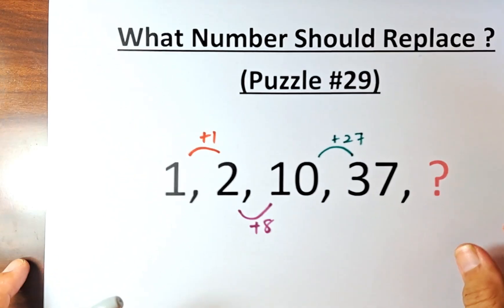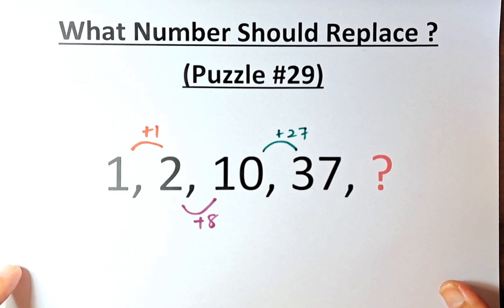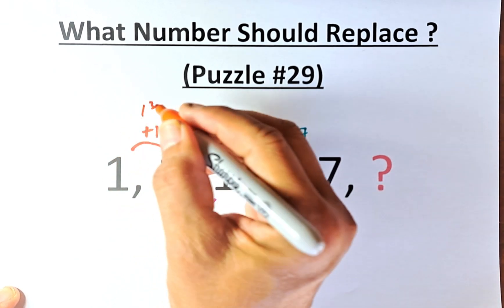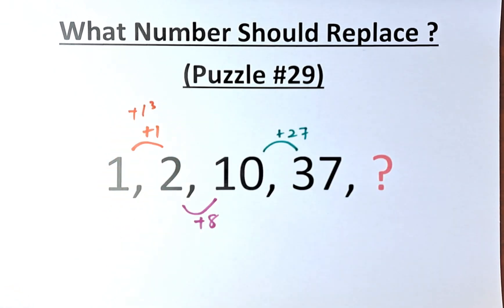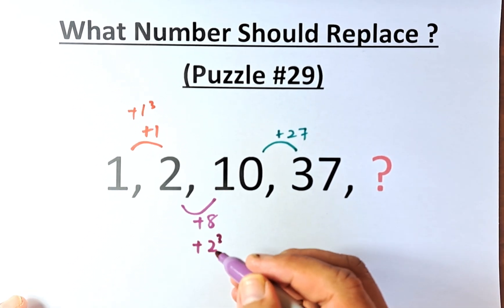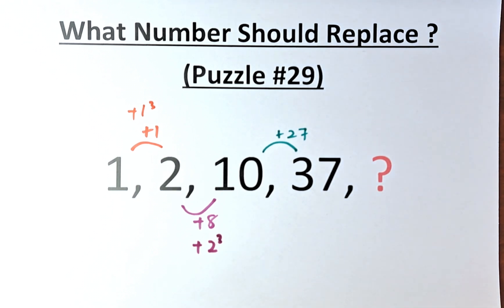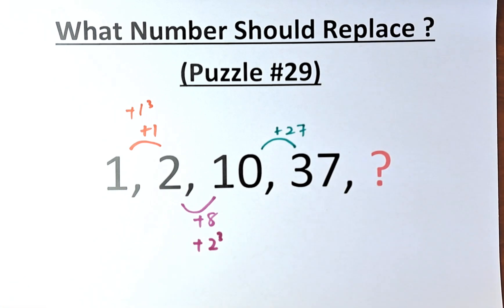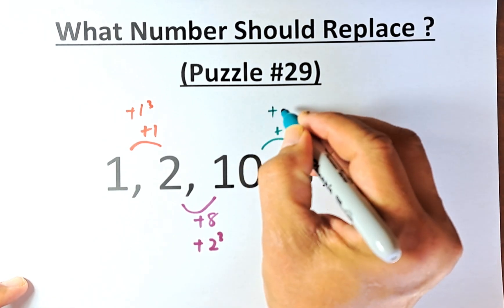So you can see there's a pattern here. What is 1? 1 is actually 1 cubed. The addition of 1 equals 1 cubed. 8 is the same as plus 2 cubed. And then we have 27, 27 is going to be plus 3 cubed.